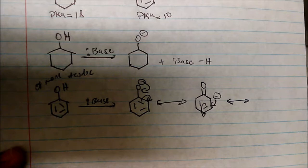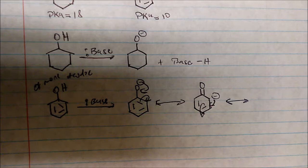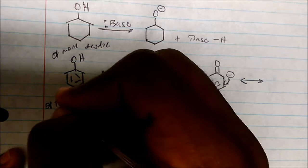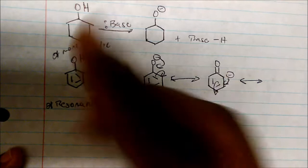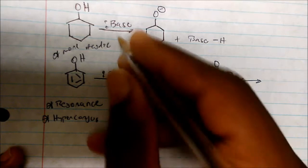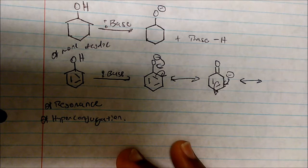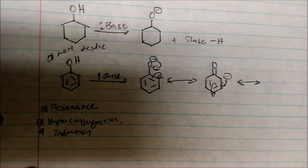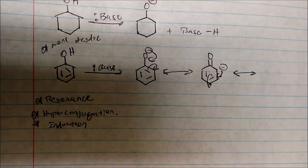It turns out that phenol is more acidic because its conjugate base is resonance stabilized, whereas cyclohexanol cannot participate in any resonance at all. The takeaway here is: when a molecule's conjugate base is more resonance stabilized, the molecule is more acidic. Resonance plays a big part, and so do hyperconjugation and induction.